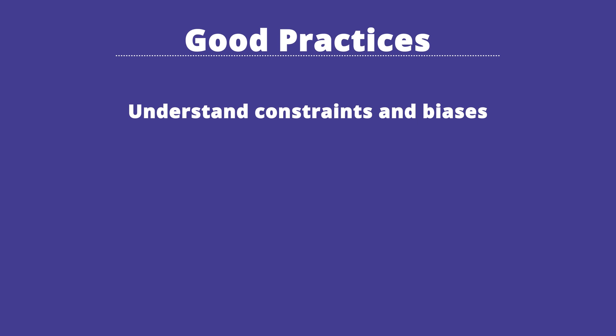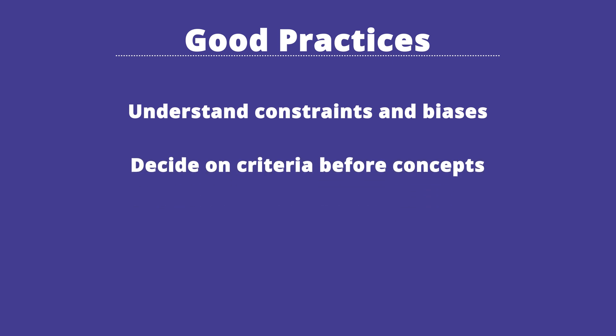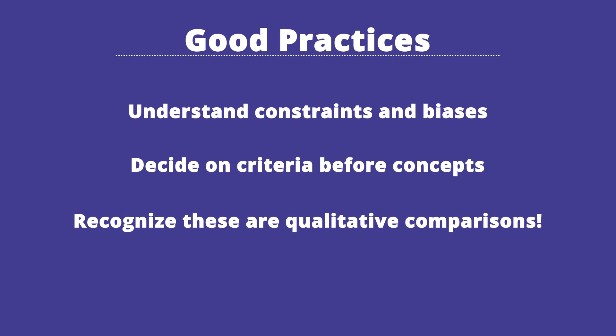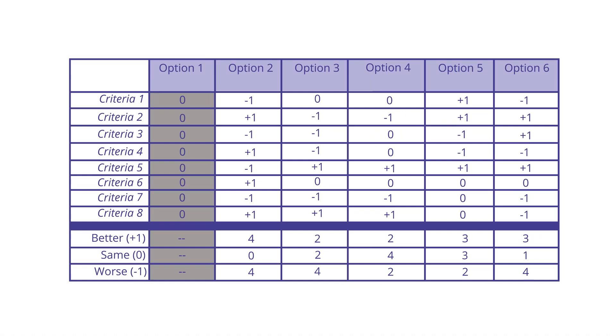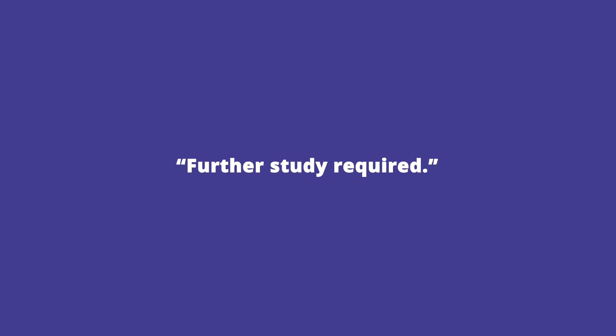What are some good practices for evaluation methods? We want to understand any constraints and biases at the start. We want to decide and agree on the criteria before we identify the concepts, and recognize that we're making qualitative comparisons. Where using a team, have members do their own rating and then discuss to derive a team result. Recognize the limitations of numeric comparisons — we're using relative weights based on qualitative judgment. Consider profiles rather than summing things up. Be cognizant of the scales used and only do appropriate operations given your scales. There's a lot of pressure to arrive at a recommended choice, and this needs to emerge from discussions, not be a turn-the-crank process. Sometimes the answer from running a decision matrix is simply that further study is required.